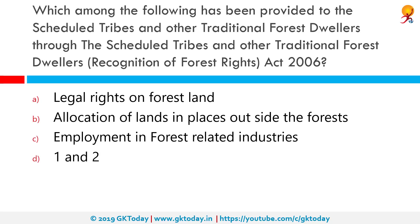Which among the following has been provided to tribal tribes and other traditional forest dwellers through the Scheduled Tribes and Other Traditional Forest Dwellers Recognition of Forest Rights Act 2006? Correct answer is legal rights and forest land. This is a key piece of forest legislation passed in India on 18th December 2006. It has also been called the Forest Rights Act, the Tribal Rights Act, the Tribal Bill, and the Tribal Land Act.